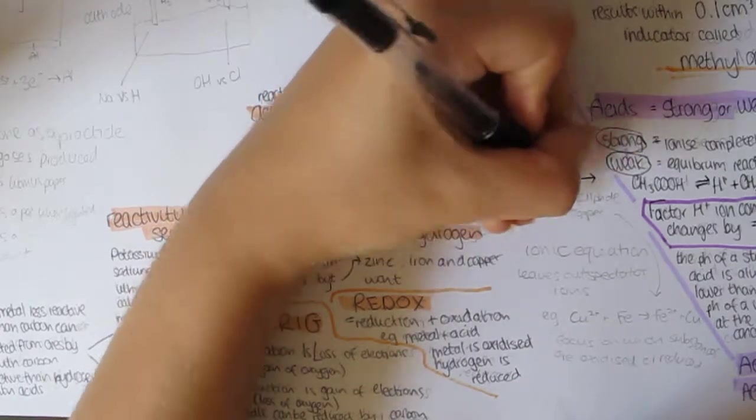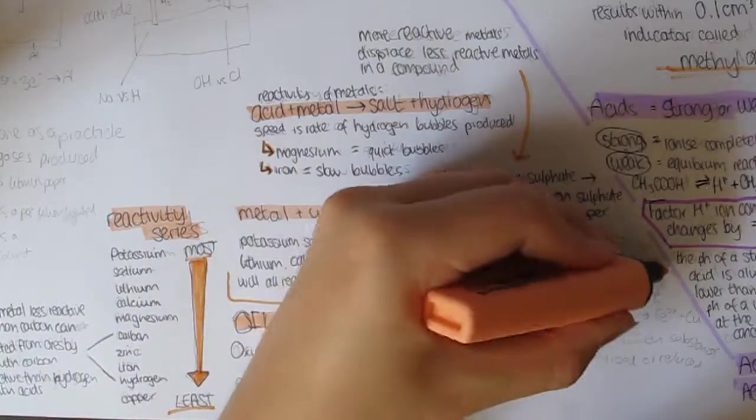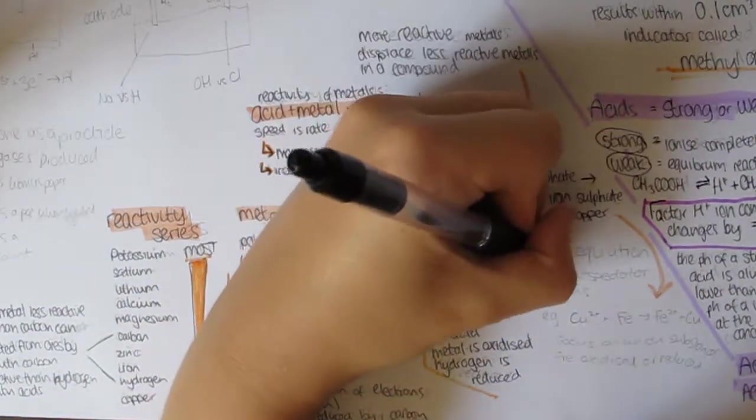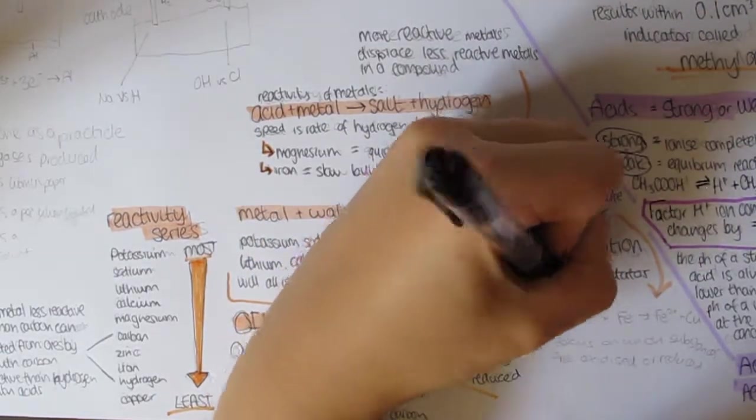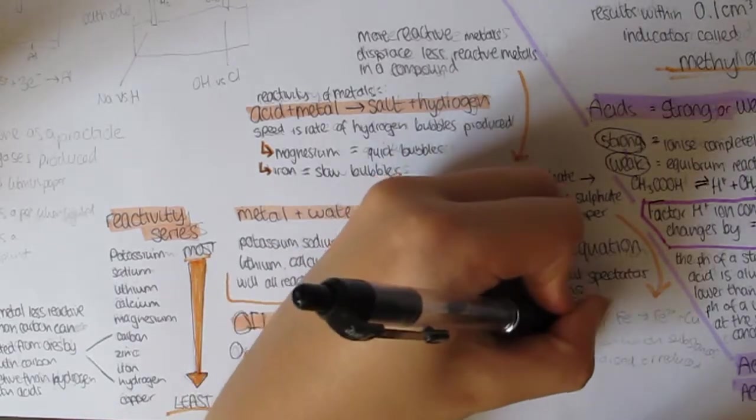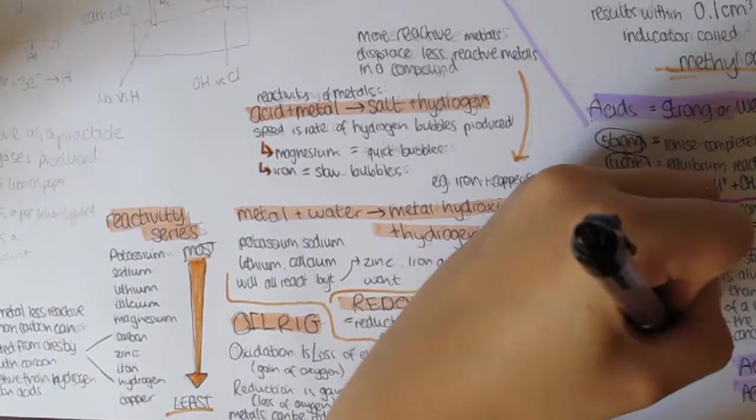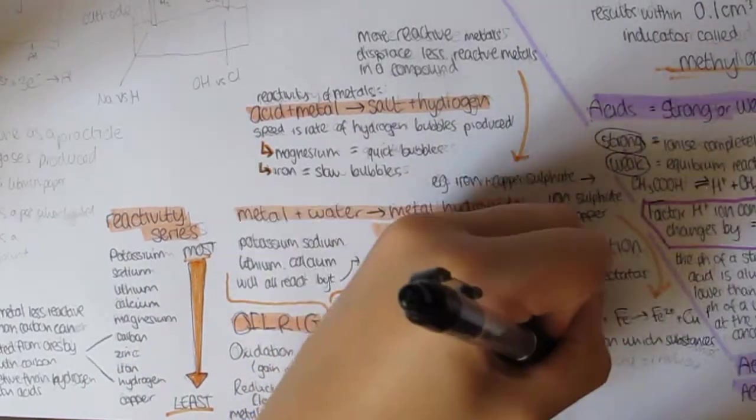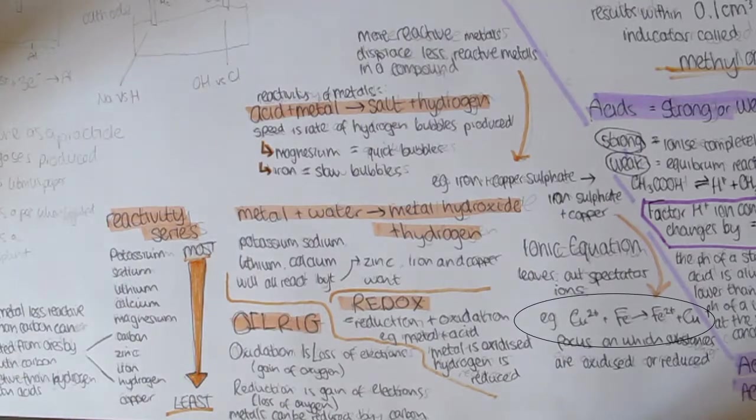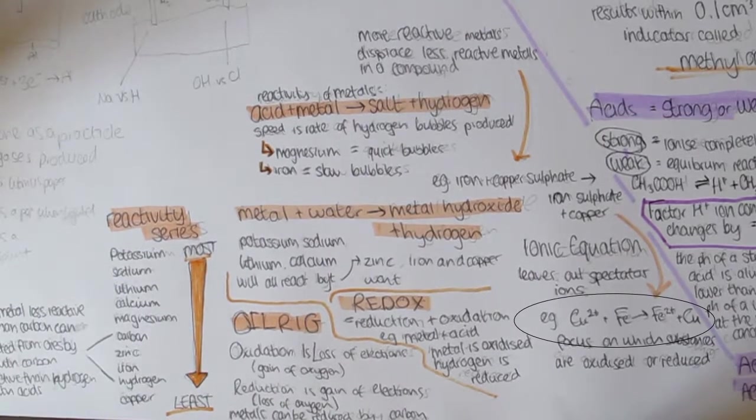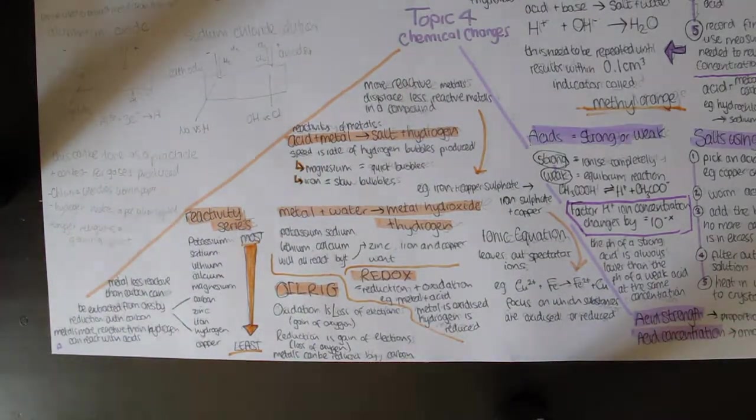In exams you could be asked to write down the word or symbol equation for metal displacement reactions. One way you could be asked is in an ionic equation, which only shows the bits of reaction which actually do stuff. For example, from the examples above, sulfate does nothing so it will be left out. This is called a spectator ion. The other ions that do change have their charges shown. For example, the ionic equation for above is Cu2+ plus Fe makes Fe2+ plus Cu. This way you can focus on the substances which are oxidized or reduced.